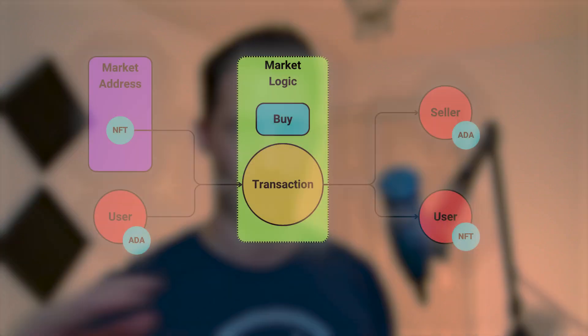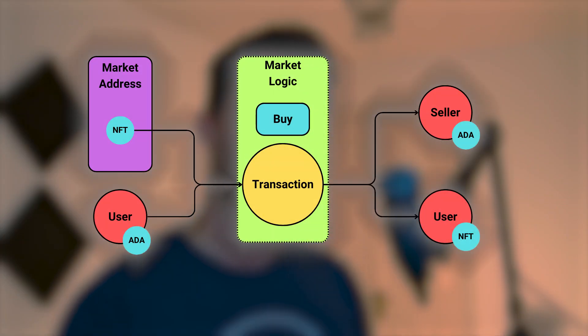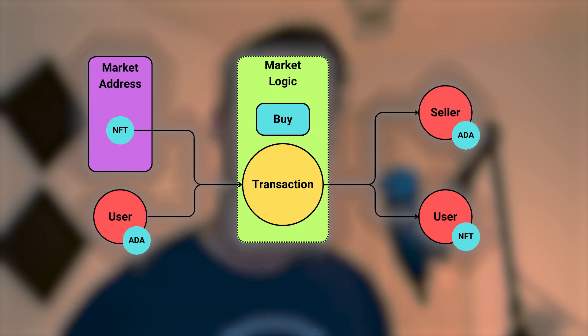So with our buy case, if you remember, we need to make sure that the output is the NFT — the asset at our UTXO — is going to the person buying, and that the seller is receiving their ADA which they've listed as the price. So we need to check those two things. That's what we're going to be doing in this video.